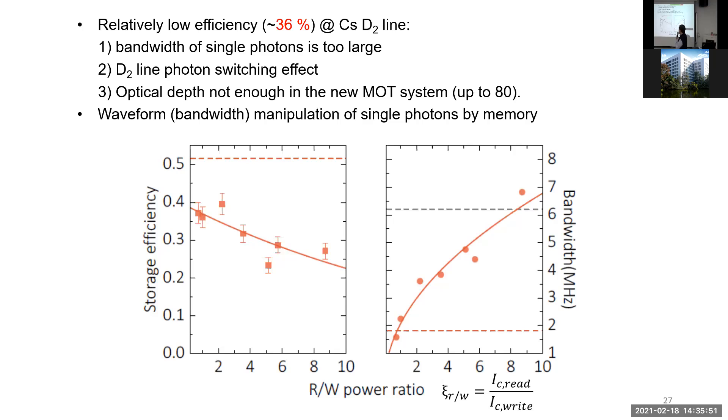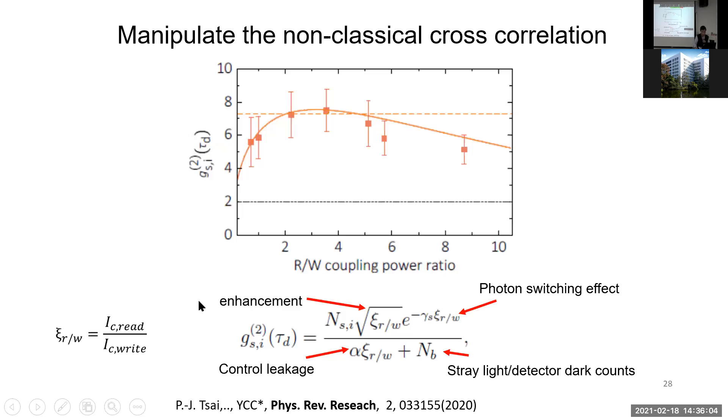We only reached 35% efficiency for cesium D2 line because of the off-resonant excitation effect. Also because the bandwidth of our single photon at that time was not narrow enough, and also the optical depth for this system was not quite high yet. Here shows the normalized cross correlation function versus read-to-write control power ratio. It goes up a little bit and then goes down. At very high intensity, the off-resonant excitation effect becomes bigger again in the cesium D2 line.